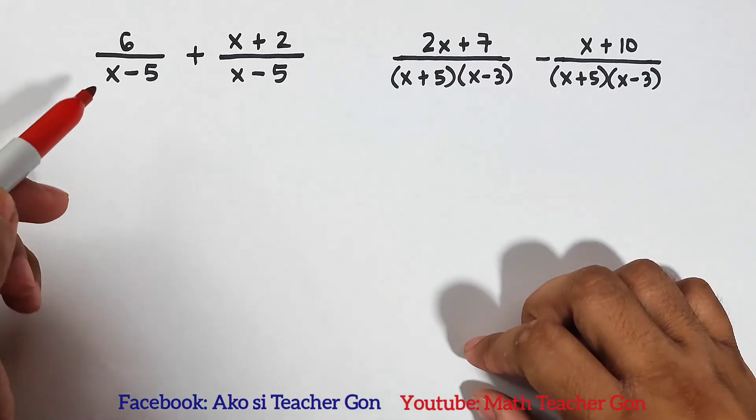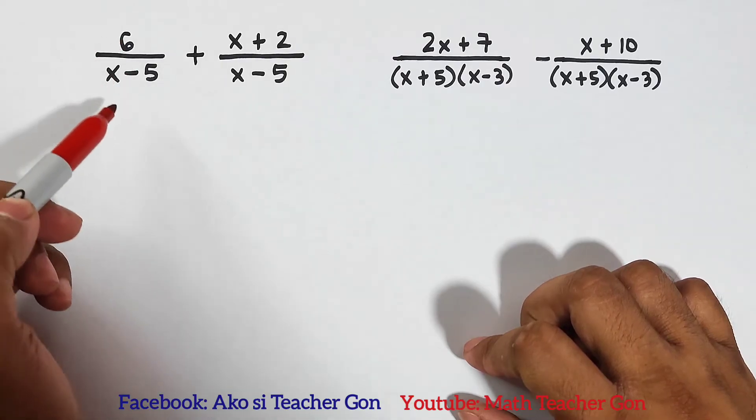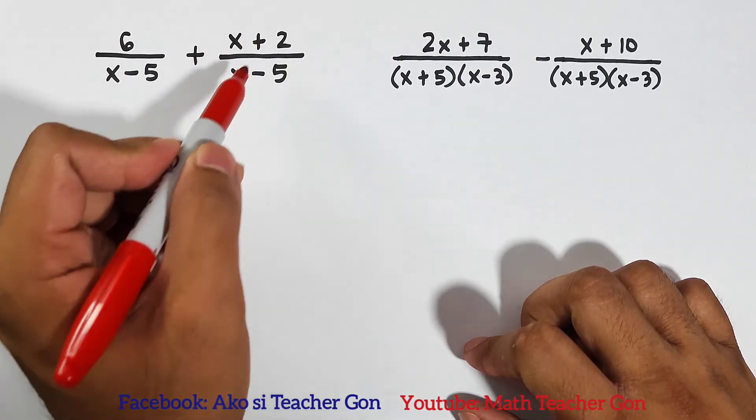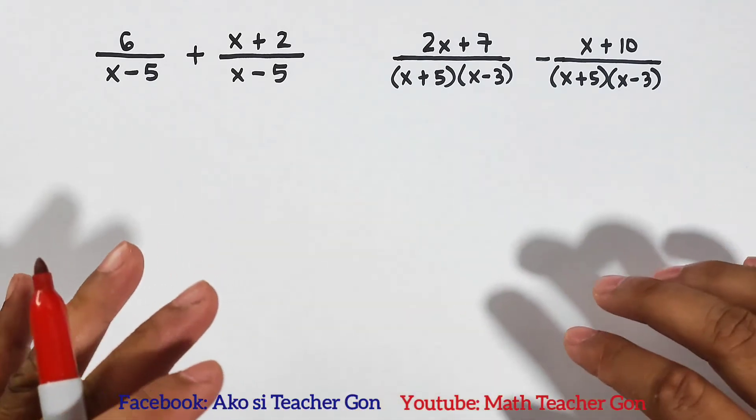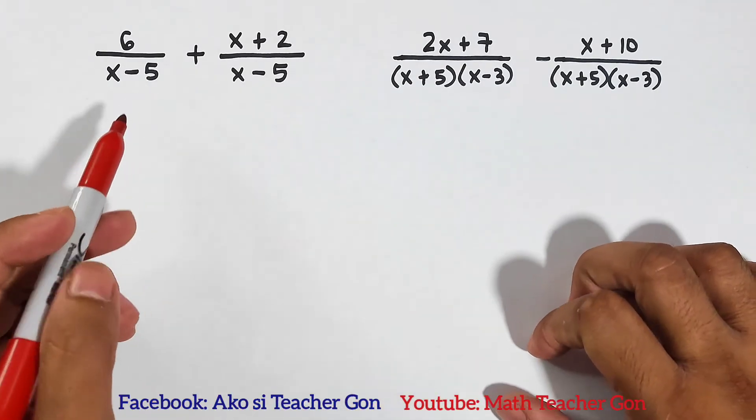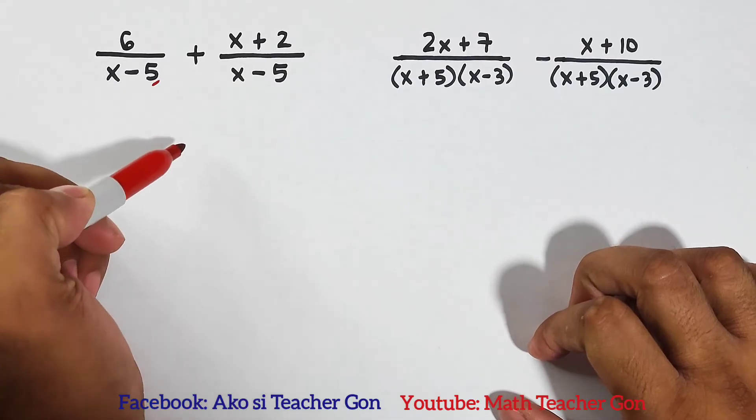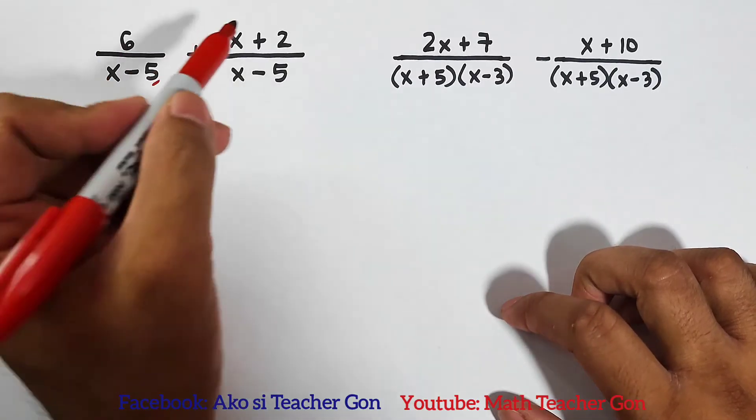Let's start with item number one. We are given 6 over x minus 5 plus x plus 2 over x minus 5. These two examples are not that difficult because they have the same denominators. Here we have x minus 5 and here we have x minus 5.